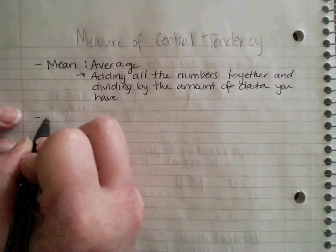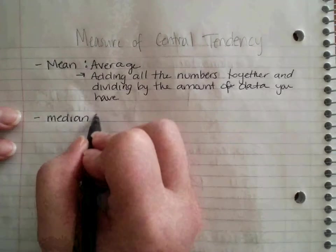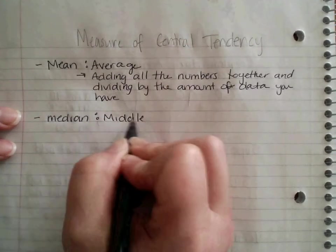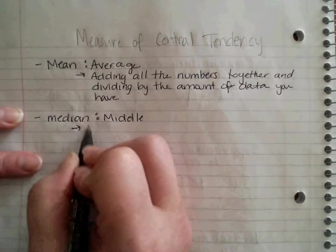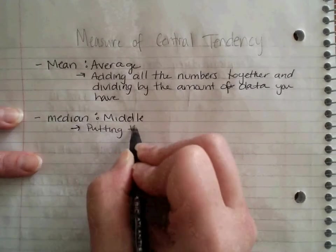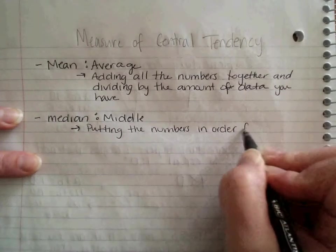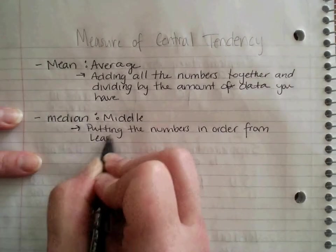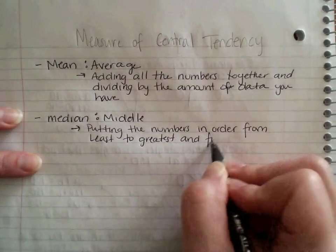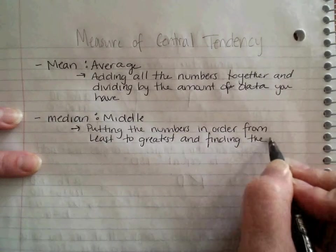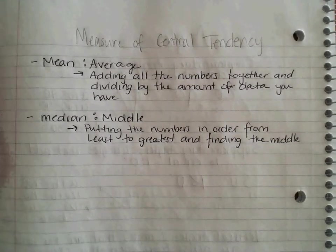The next word you heard me say was median. And what median means to us is middle. So the median you find by putting the numbers in order from least to greatest and finding the middle. So the middle of the numbers when you put them in order from least to greatest.